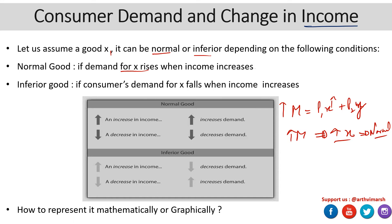For an inferior good it's the opposite: if a consumer's demand for x falls when income rises — so an increase in income leads to a fall in demand for commodity x — it means that it is inferior. This table basically summarizes these two things: normal good shows increase in income leading to increase in demand, and inferior good shows increase in income leading to decrease in demand.